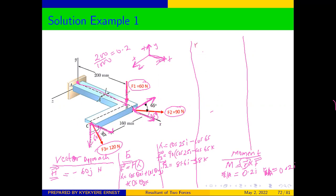For the force applied at C, the position vector R_C/A means moving from A to where the force is applied at C. We move 0.2 along X and then from that point to C in the positive Z direction, giving R_C/A equals 0.2i plus 0.16k.